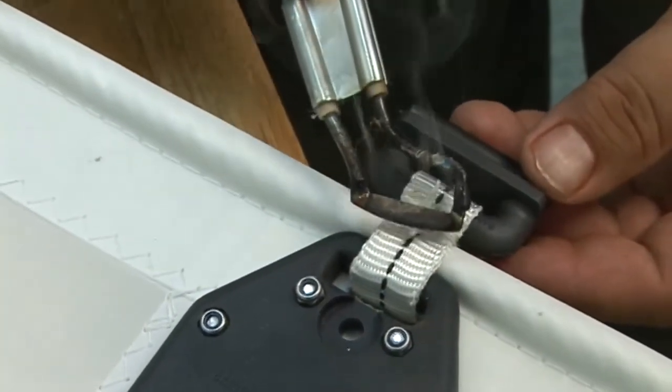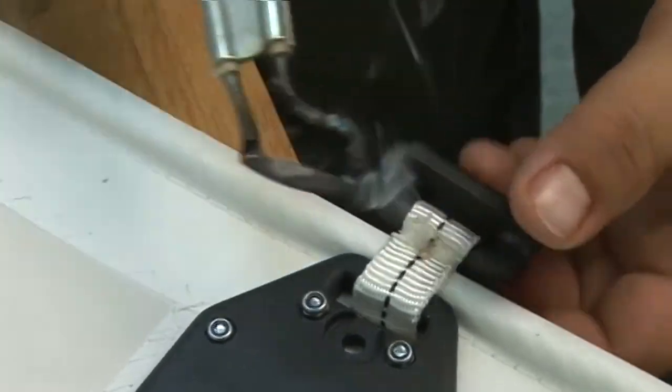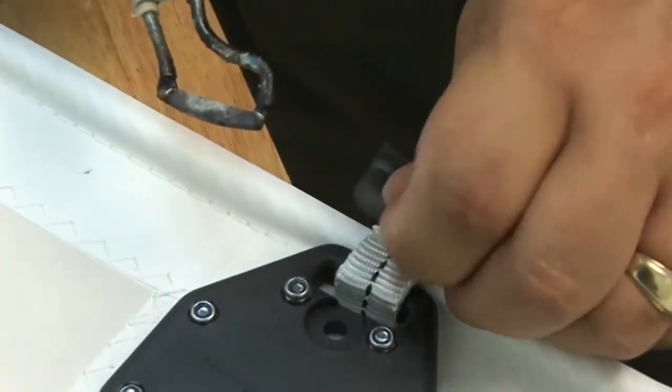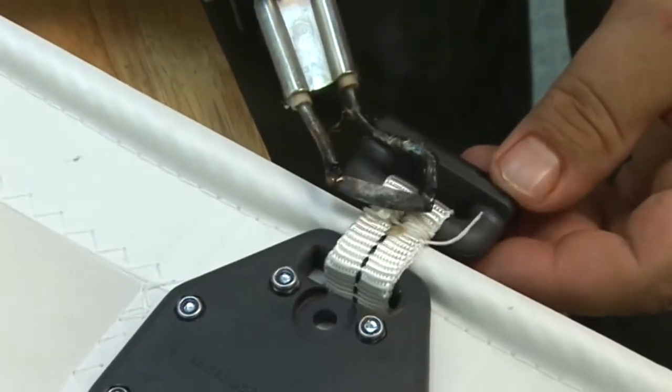Leave about a quarter inch or a half inch, melt it. Then after it's cooled a teeny bit, don't let it cool too long. Just take your thumb and push on it and that creates a nice button that will not come undone.